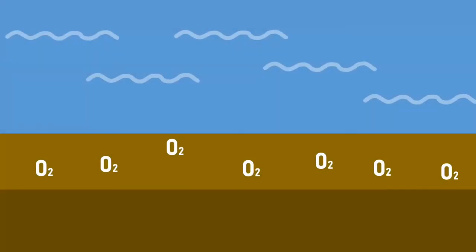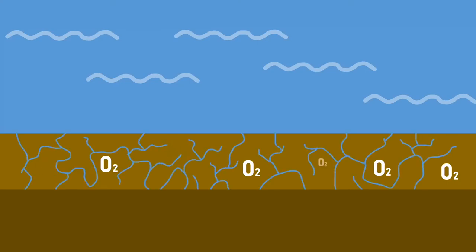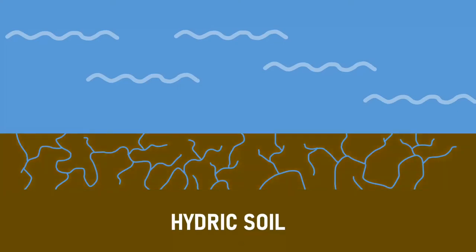The excess water in these areas of land covers most of the air gaps found in the soil, reducing the amount of oxygen and creating a unique soil type known as hydric soil.